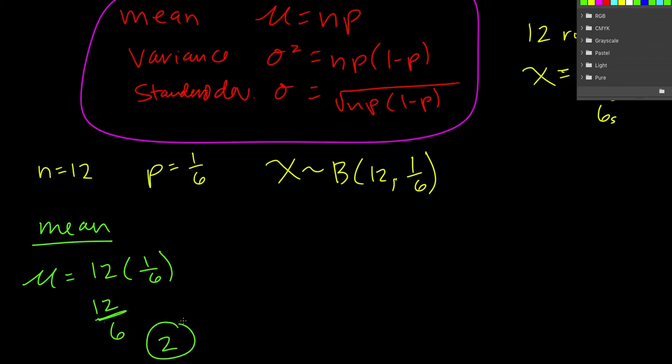Now if we find the variance, it's right here. So our n is 12, our p is 1 sixth, and then 1 minus 1 sixth.